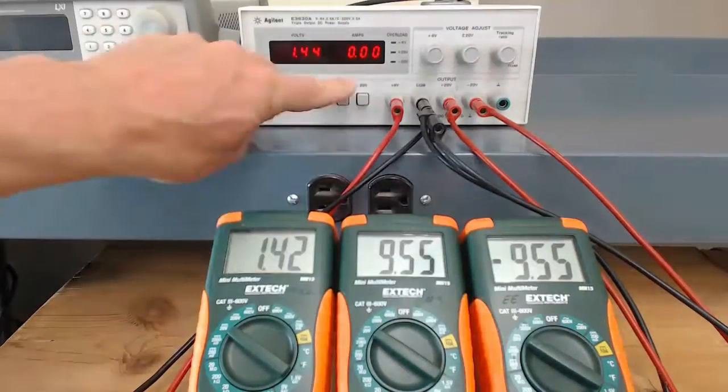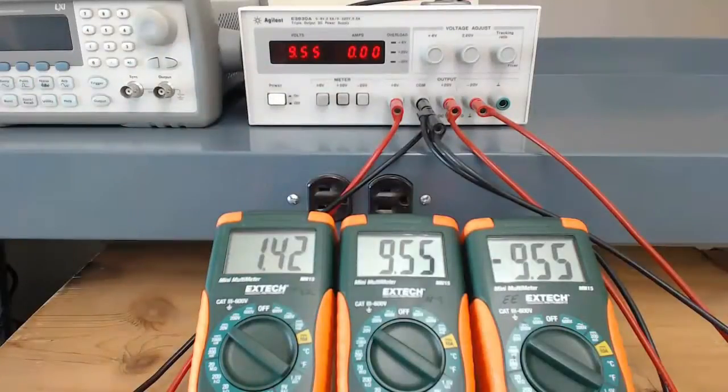If I select the different meter outputs, the values on the digital multimeters do not change.